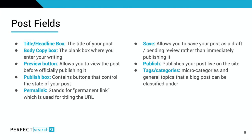Tags and categories are microcategories and general topics that a blog post can be classified under. If you've got a digital marketing site, users who are only interested in paid search content can click that tag and peruse just that content, rather than sifting through your whole page or bouncing off your site. Tags and categories can be a really great way to organize your site.